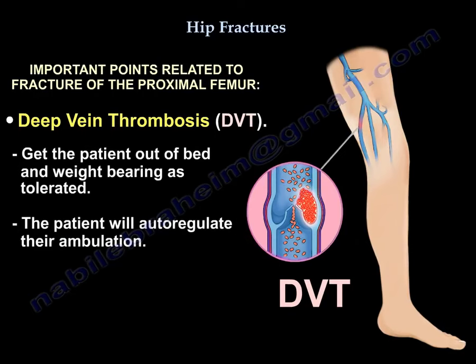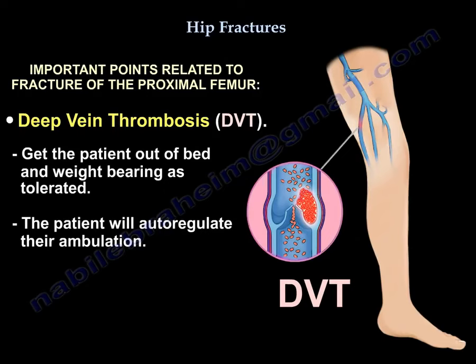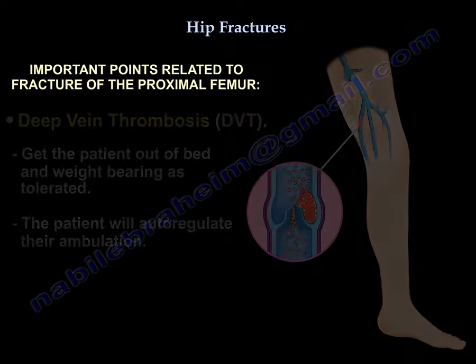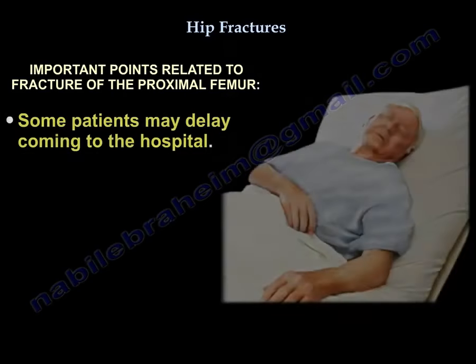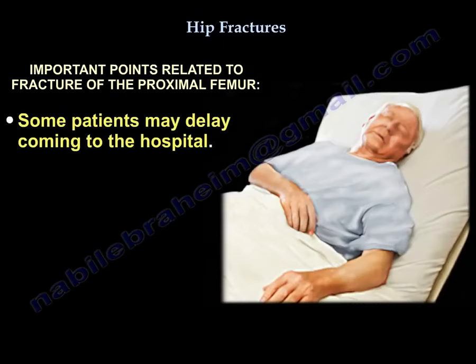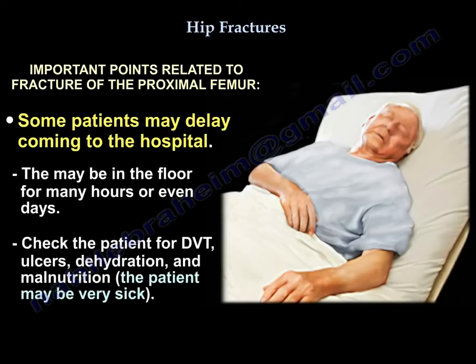Get the patient out of bed and weight-bearing as tolerated — the patient will auto-regulate their ambulation. Some patients may have a delay before coming to the hospital and might have been on the floor for many hours, or even days. Check them for DVT, ulcers, dehydration, and malnutrition, as they can be very sick.